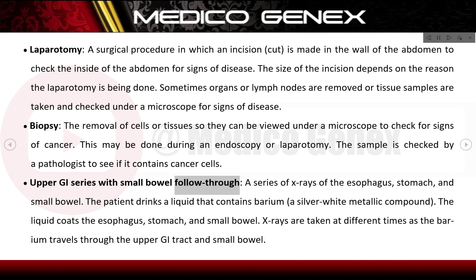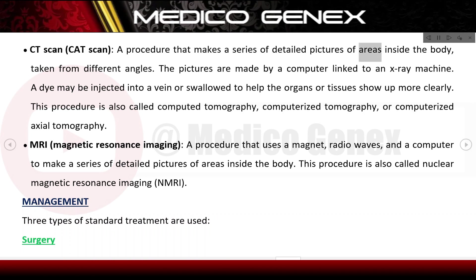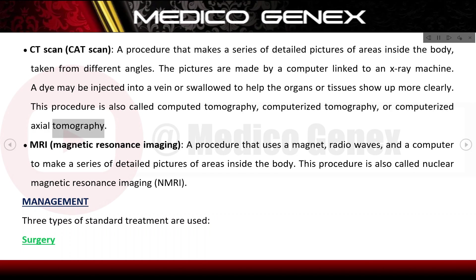Upper GI series with small bowel follow-through is a series of x-rays of the esophagus, stomach, and small bowel. The patient drinks a liquid containing barium, a silver-white metallic compound, which coats the esophagus, stomach, and small bowel. X-rays are taken at different times as the barium travels through the upper GI tract. CT scan (CAT scan) makes a series of detailed pictures of areas inside the body from different angles using a computer linked to an x-ray machine; a dye may be injected or swallowed to help organs show up more clearly — also called computed tomography or computerized axial tomography. MRI (magnetic resonance imaging) uses a magnet, radio waves, and a computer to make detailed pictures of areas inside the body — also called nuclear magnetic resonance imaging (NMRI).